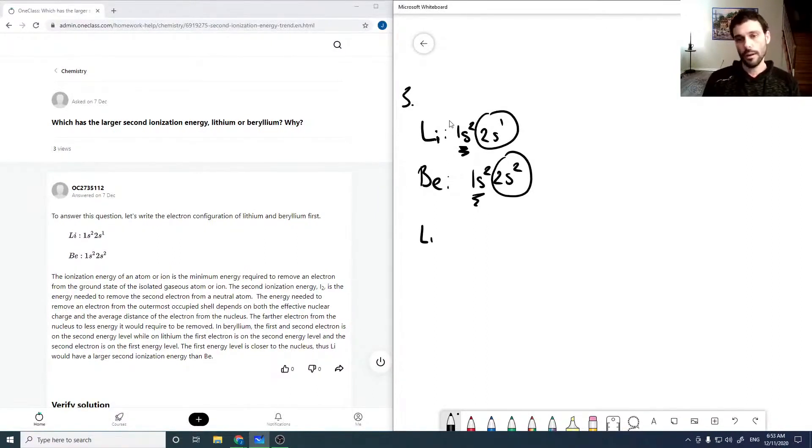So our lithium is going to go to lithium plus, whose electron configuration is 1s2. And then for the second ionization energy, it's going to go to lithium 2 plus, which has a 1s1 electron configuration. So here we're removing a 1s electron.